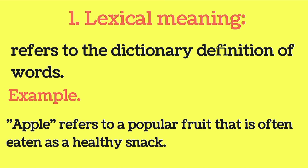The first type of meaning is lexical meaning. What is meant by lexical meaning? Lexical meaning refers to the dictionary definition of words. For example, apple — apple refers to a popular fruit that is often eaten as a healthy snack. So this kind of meaning is called lexical meaning.